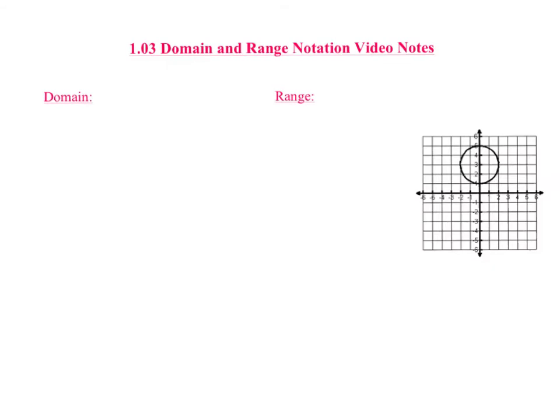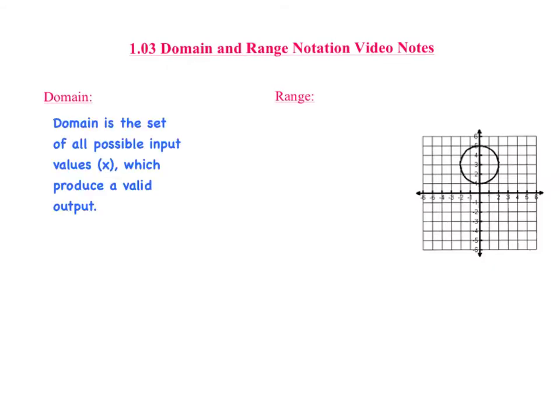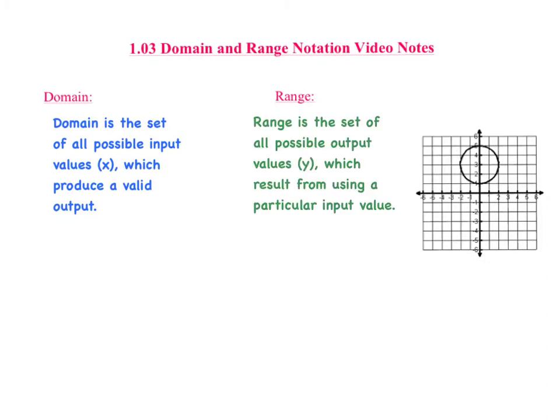First, let's define domain and range. A very basic definition of domain is that the domain is the set of all possible input values which produce a valid output. A basic definition of range is that the range is the set of all possible output values which result from using a particular input value. We use domain and range to identify the boundaries of any relation, whether it be a function or not.